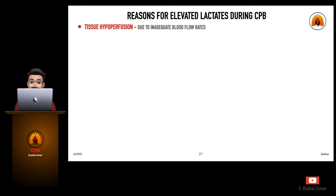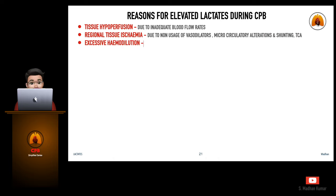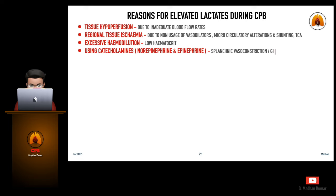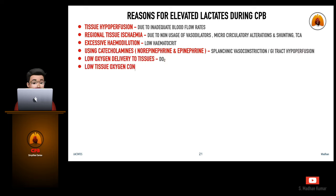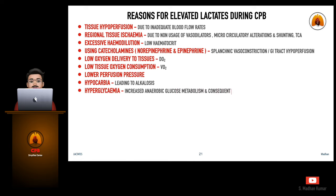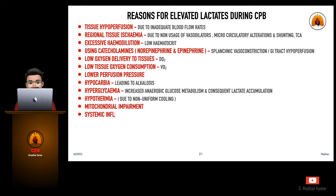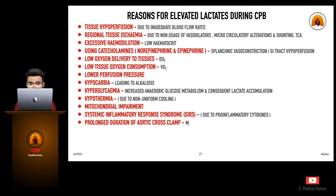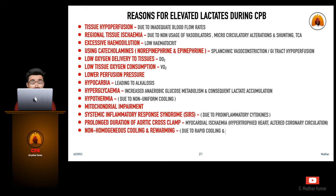Tissue hypoperfusion results from inadequate blood flow rates. Regional tissue ischemia occurs due to non-use of vasodilators, microcirculatory alterations, or total circulatory arrest. Excessive hemodilution causes low hematocrit, reducing oxygen-carrying capacity and leading to anaerobic metabolism and increased lactate production. Catecholamines like norepinephrine and epinephrine can cause hepatic splanchnic vasoconstriction, GI tract hypoperfusion, low oxygen delivery, low tissue oxygen consumption, lower perfusion pressure, hypercarbia causing alkalosis, and hyperglycemia with increased anaerobic glucose metabolism and consequent lactate accumulation.